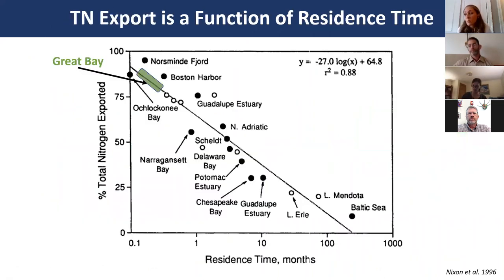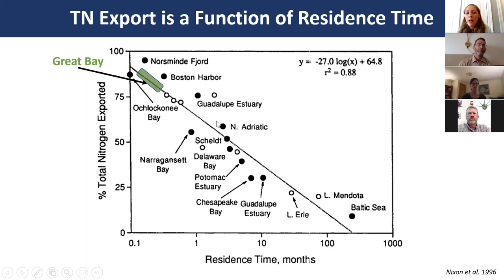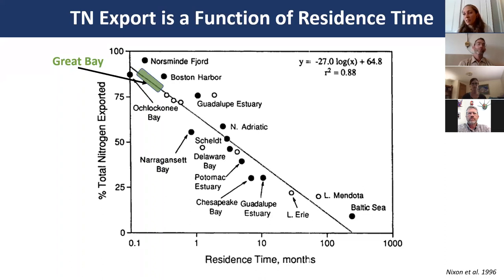Total nitrogen and particulate nitrogen export is thought to be a function of residence time. A figure from Nixon et al. 1996 looked at a suite of estuaries across sizes, eutrophication status, and climate types, finding a strong relationship between residence time and the percentage of nitrogen inputs exported. Given Great Bay's residence time of 5 to 20 days, we'd expect it to export between 78 and 90% of total nitrogen inputs, consistent with the net export result.